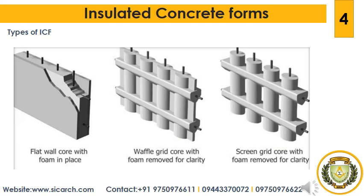The first type is the flat wall system, which has a solid concrete wall of uniform thickness. This system has a nominal concrete thickness of 4, 6, 8, or 10 inches. The actual thickness of the concrete wall is typically the nominal thickness reduced by half an inch. Bracing for the forms and steel reinforcing for the concrete is as required by the design or the manufacturer's technical data.